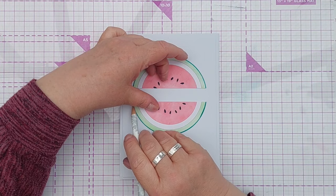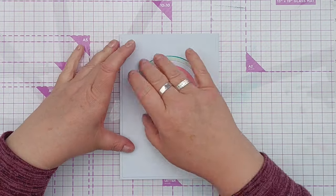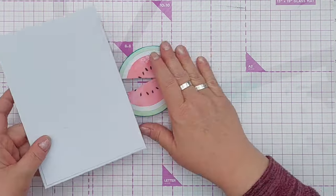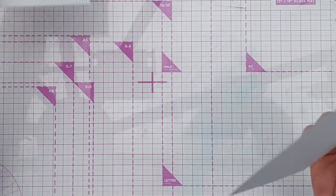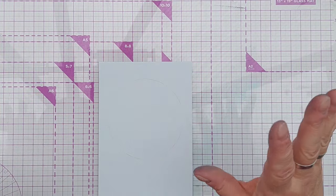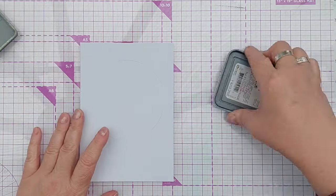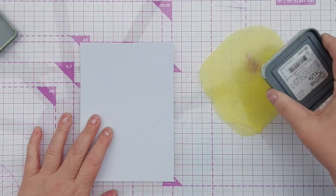I want to smoosh some color on the background to give the melon something to sit on and to bring in a bit more sunshine. For sunshine I'm going to use Squeezed Lemonade, and I am going to use my smusher for this because I want to control where I put my smushing.